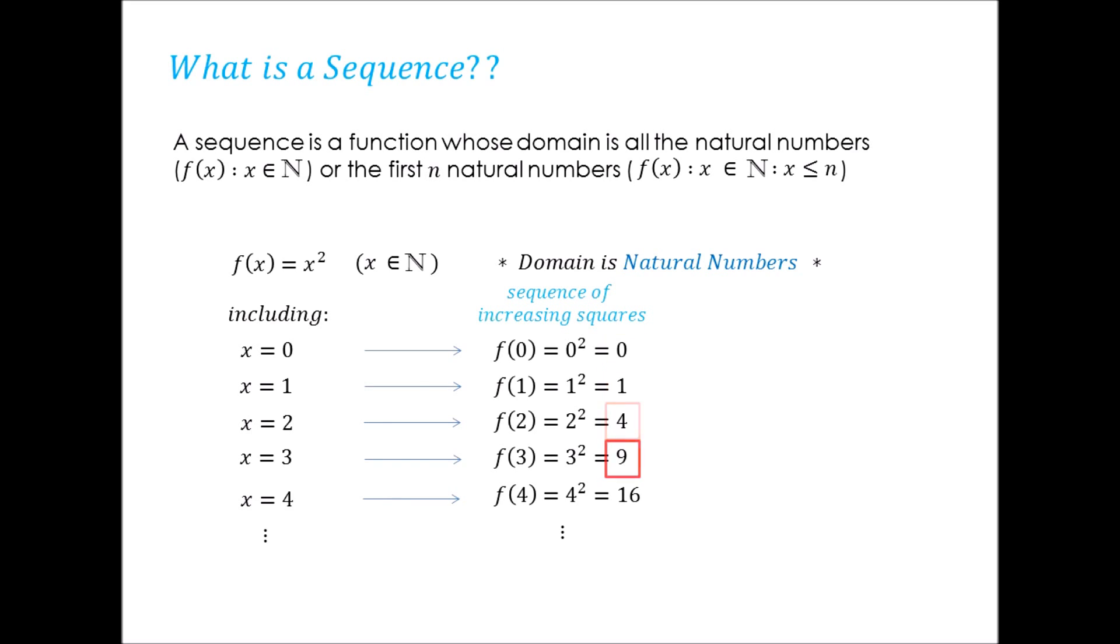Hence where the dumbed down definition of a sequence being an ordered list of numbers comes from.